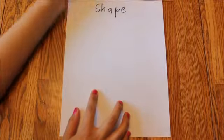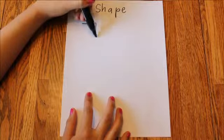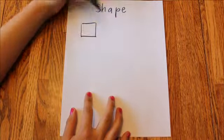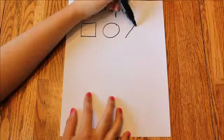First we're going to learn about shape. There are three main different kinds of shapes. There are original 2D shapes, like a square, a circle, and a triangle.